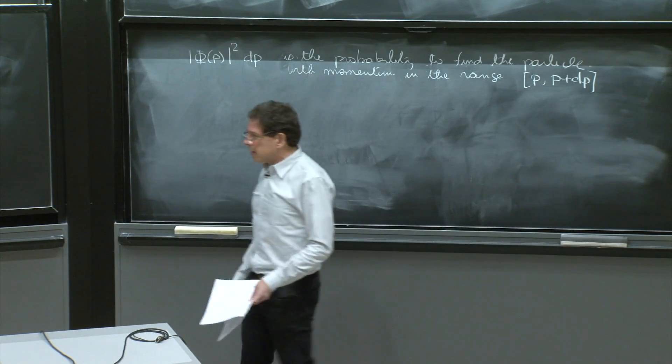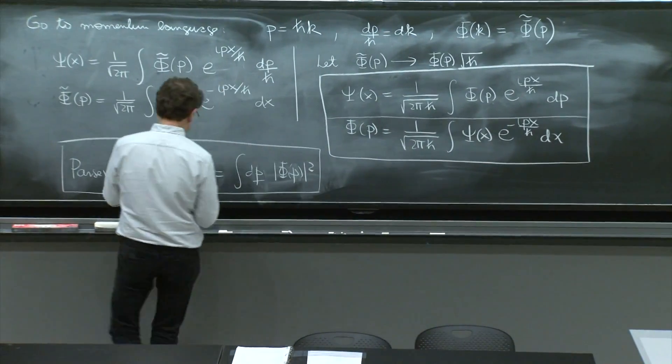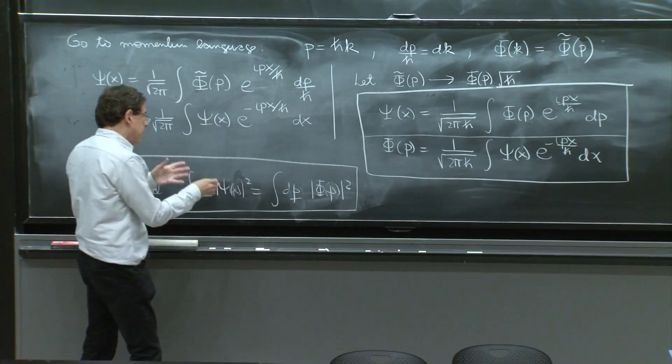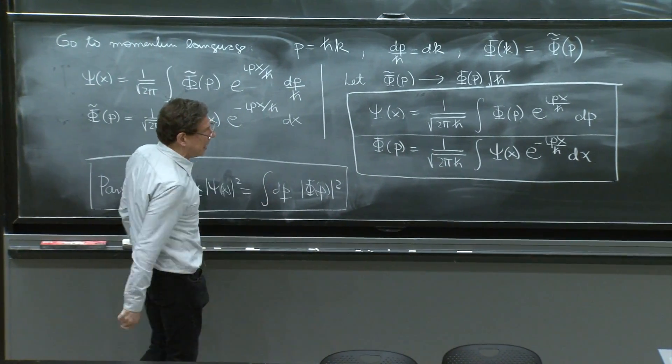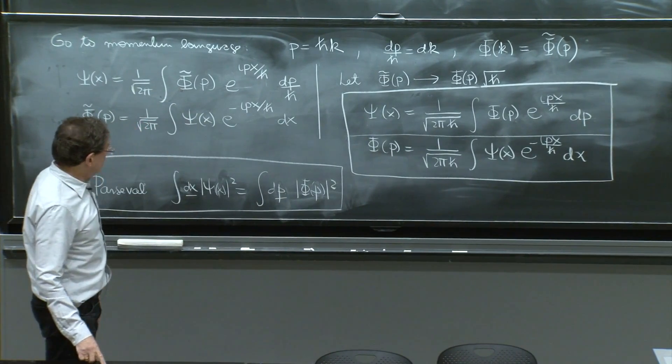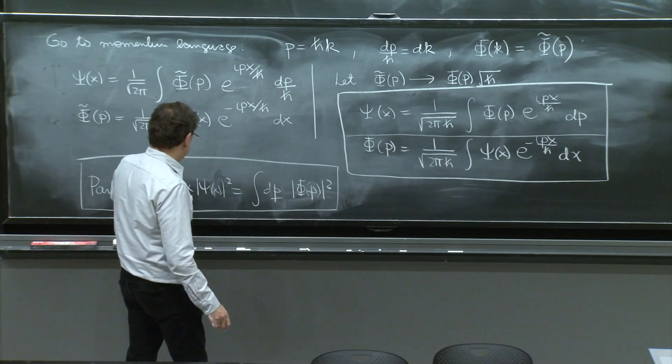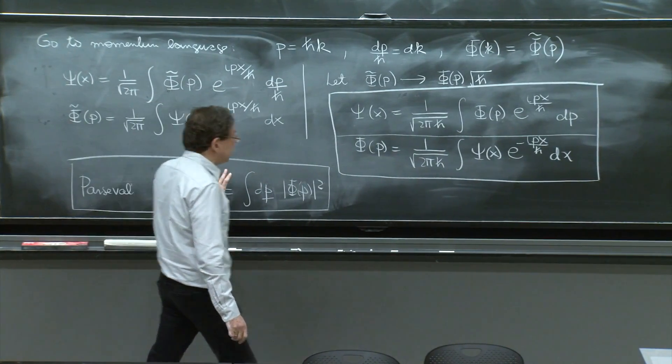just the same way as we would say that psi squared of x dx is the probability to find the particle between x and x plus dx. So this is allowed now by the conservation of probability.